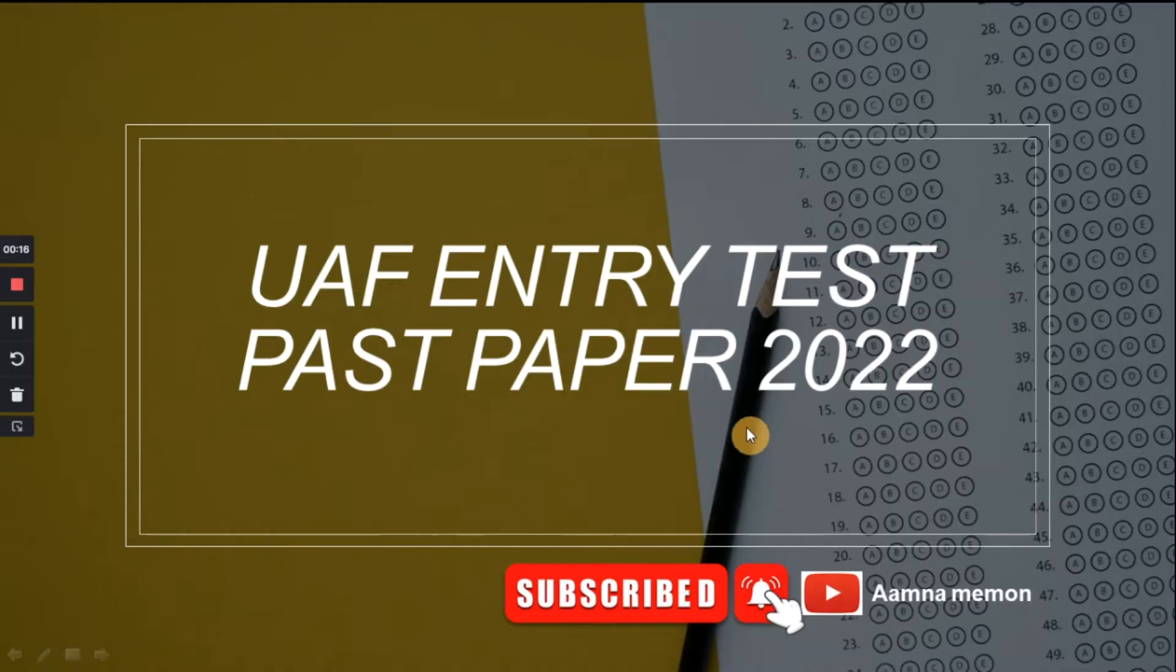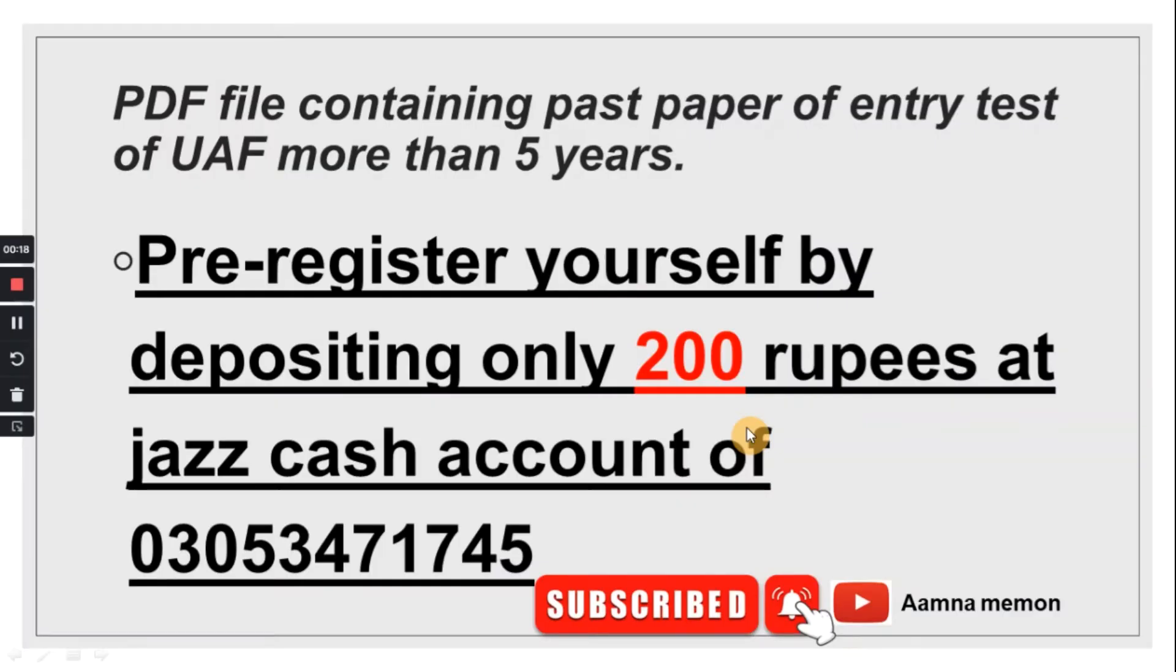If you want to have papers from 5 years in PDF file, they are typed in MS Word. The minimum cost is about 200 rupees. If you want to use jazz cash or easy cash, you will transfer it to this number.